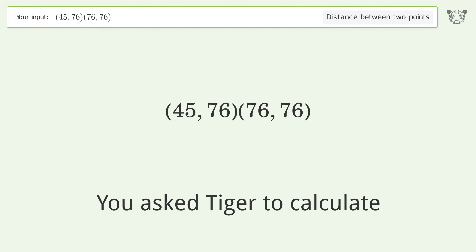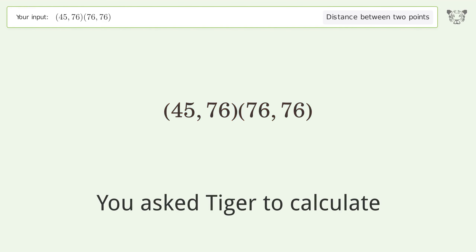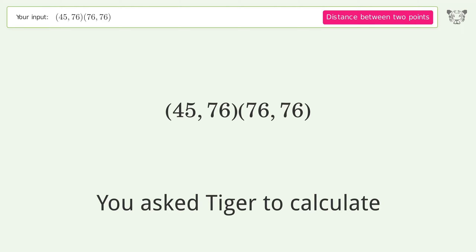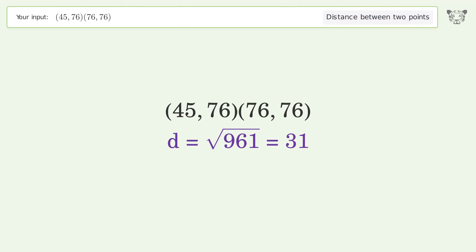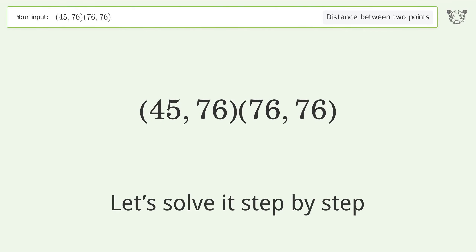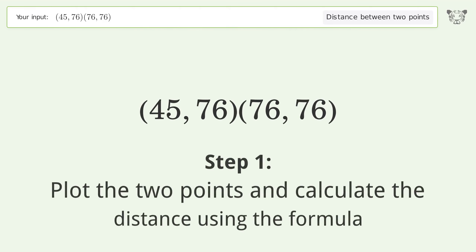You ask Tiger to calculate this. It deals with the distance between two points. The distance between the two points is the square root of 961, or 31. Let's solve it step by step: plot the two points and calculate the distance using the formula.